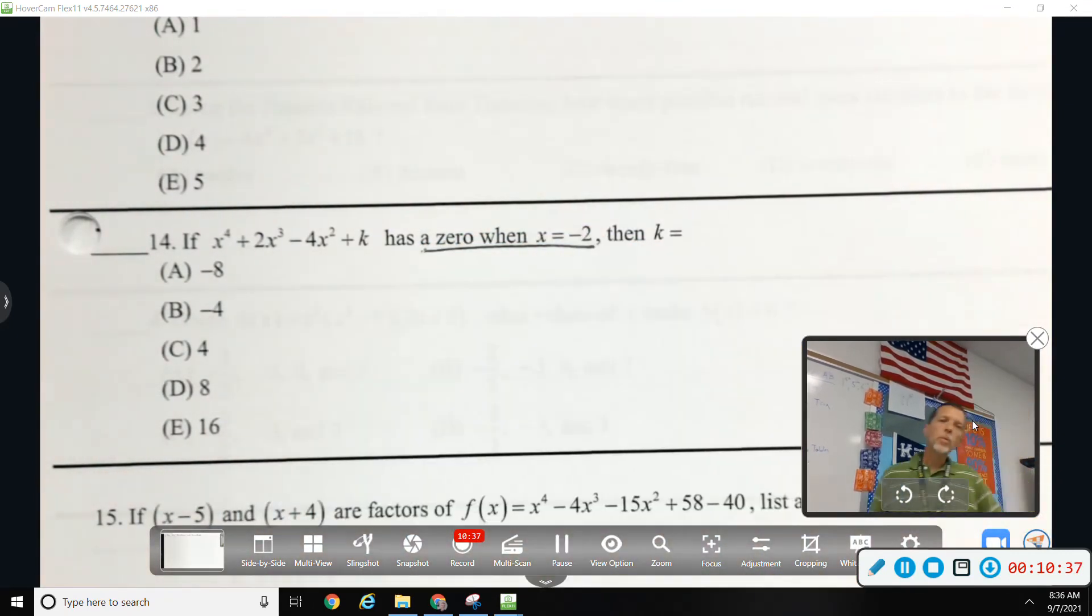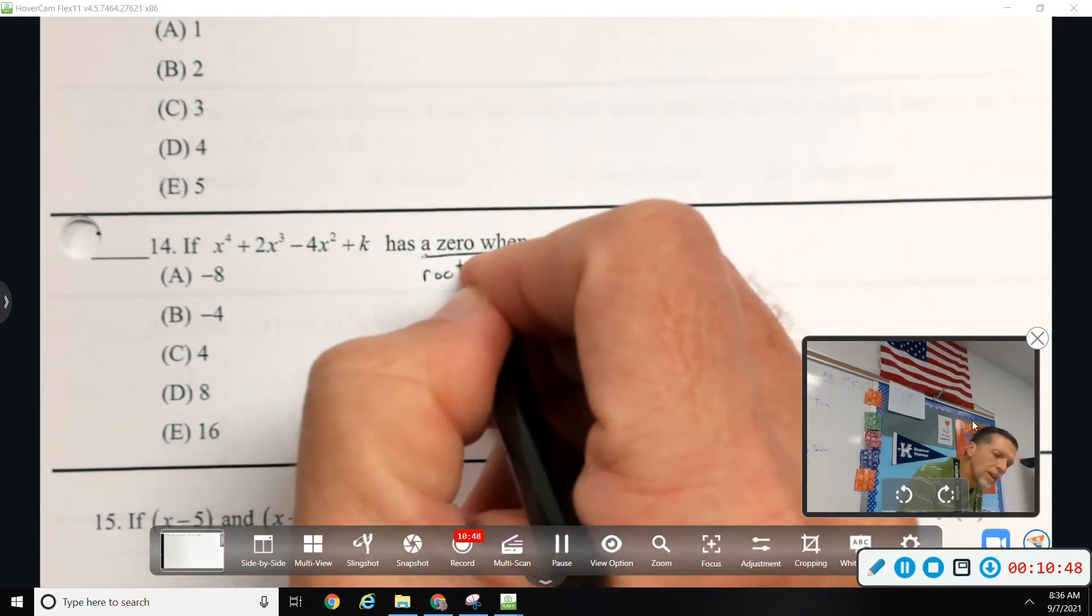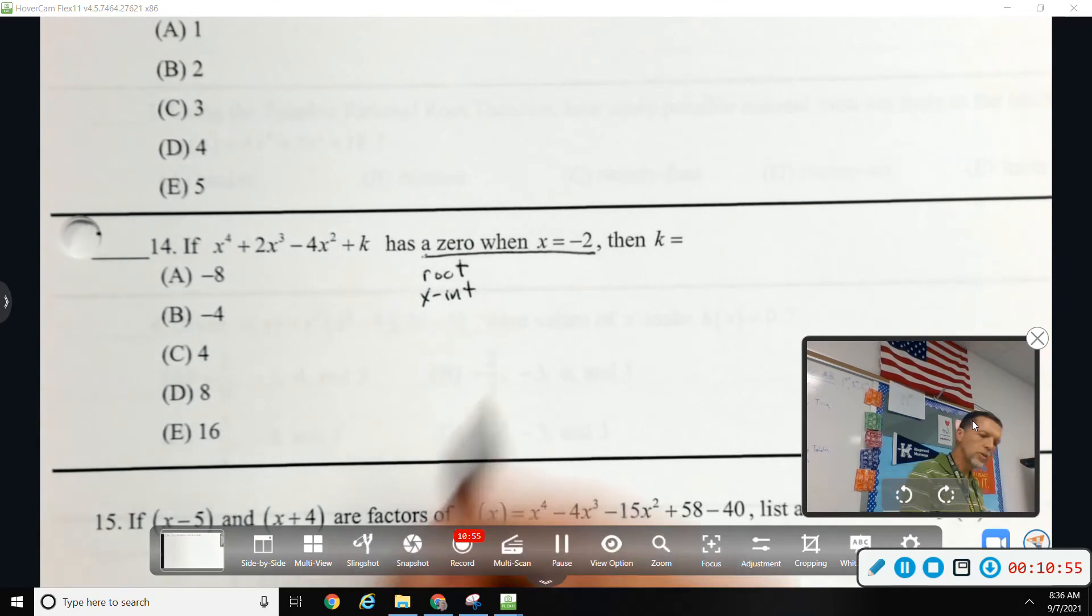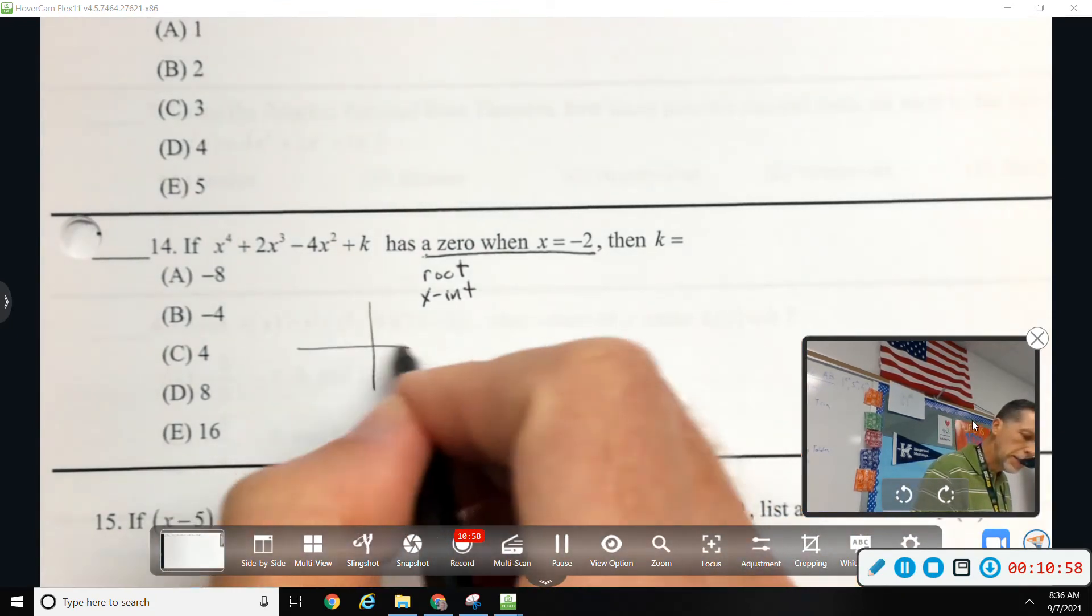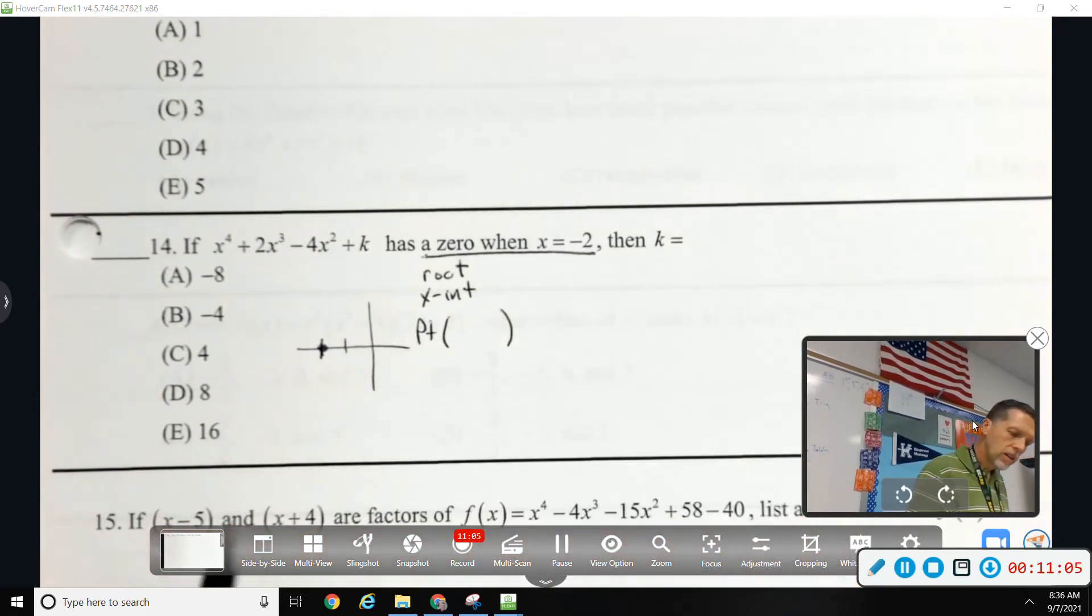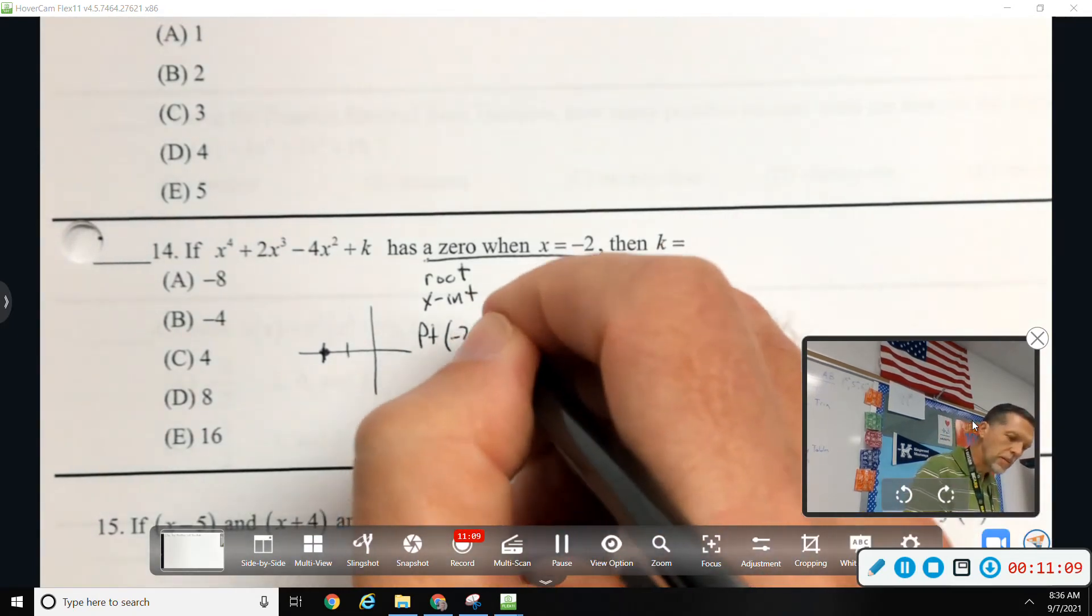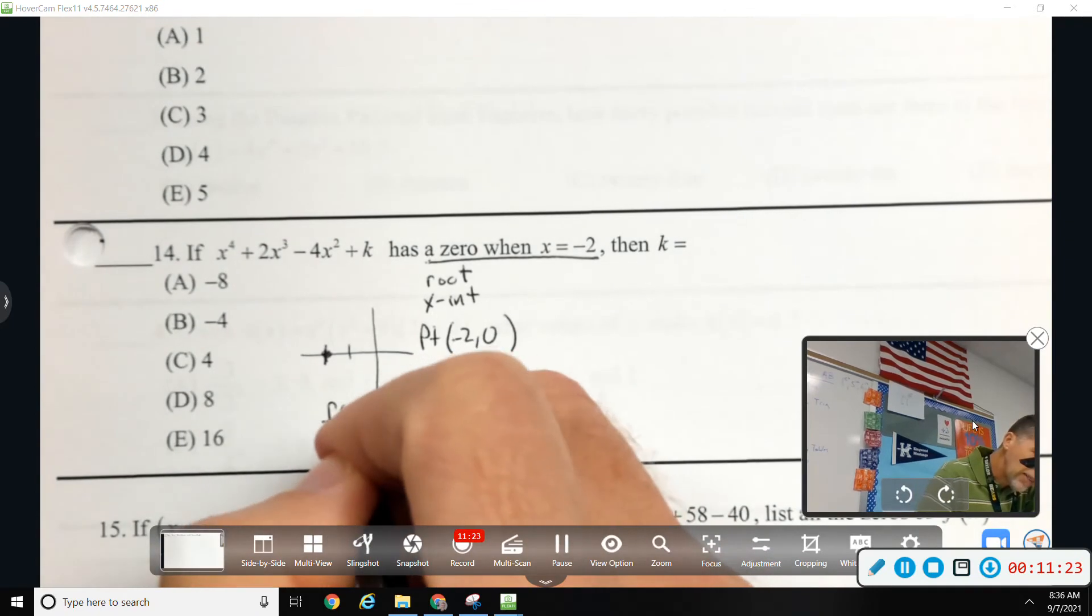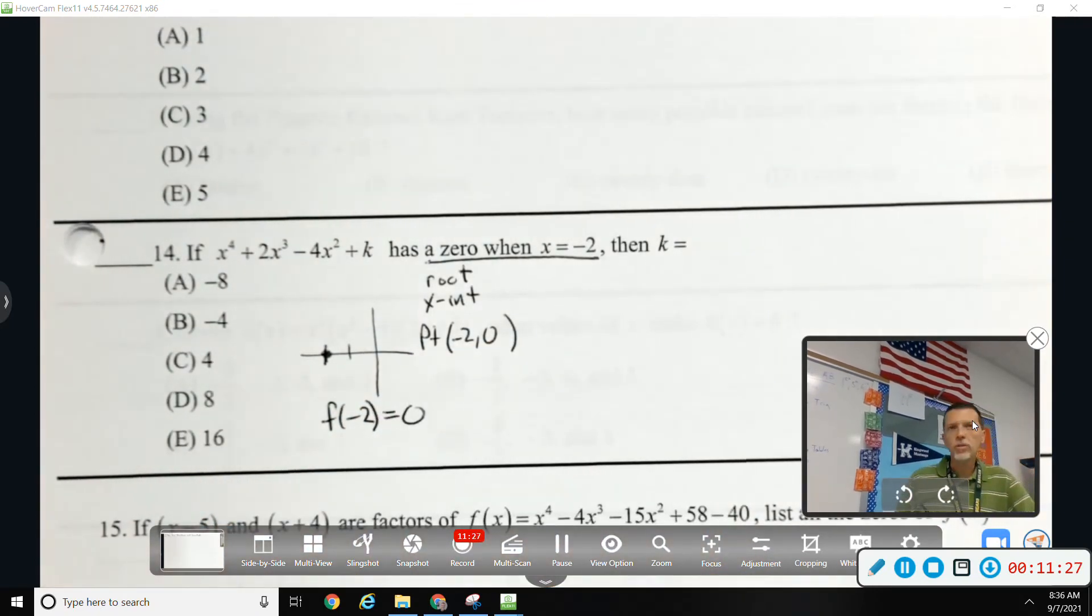So, it would be the plus 2 in that box. What does it mean when it has a 0? What does that mean? It has a root. Okay, it has a root there. What else does that mean? It's an X intercept. If there's a root where X equals negative 2, what's that point? Yeah, careful, negative 2, 0. That means if I plug in negative 2, I should get 0 for an answer. So, I'm going to work it that way, and then I'll work it the synthetic division way.